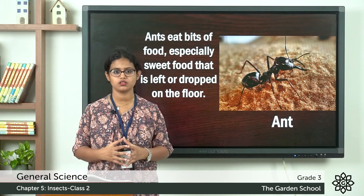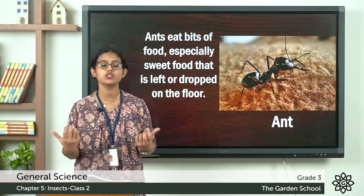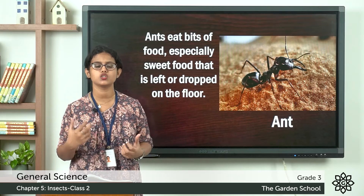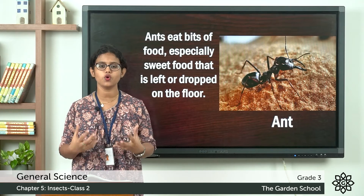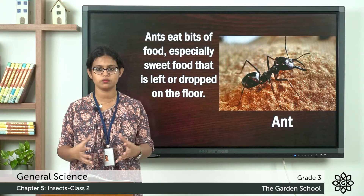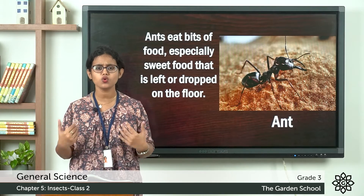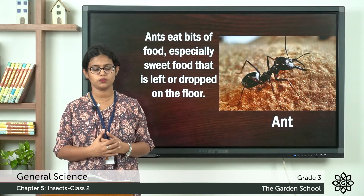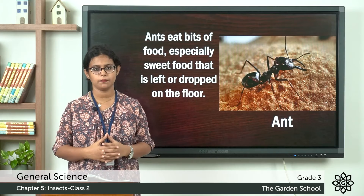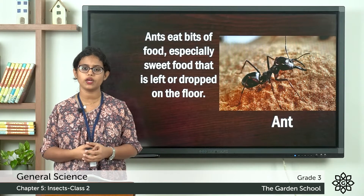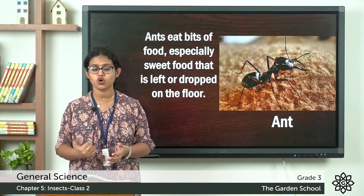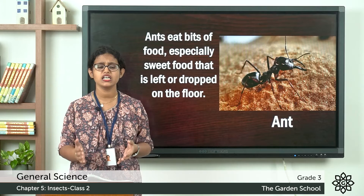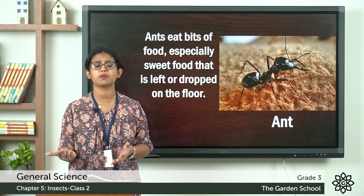What about ants? Ants feed on everything around them, but they usually prefer sweet food dropped on the floor. If you leave any sweet food on the table, after some time you will see a group of ants around it. There are also insects like flies and cockroaches which feed on all kinds of things and dirt, and they spread diseases.